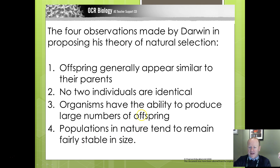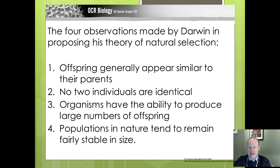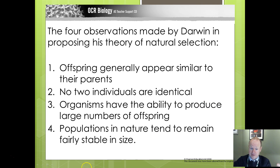Darwin's key observations that contributed towards the theory were: offspring appear similar to their parents, but not identical; organisms produce large numbers of offspring, much larger than they would actually need to just replace the two parents; and populations, unless there is a sudden change in the environment, remain stable in size and don't fluctuate wildly. These were some of his ideas that contributed to the theory of natural selection.